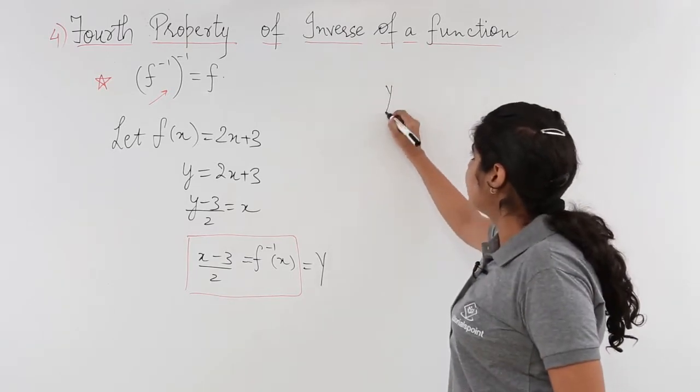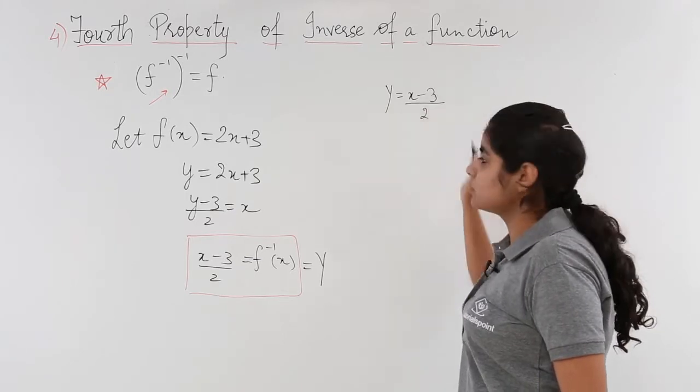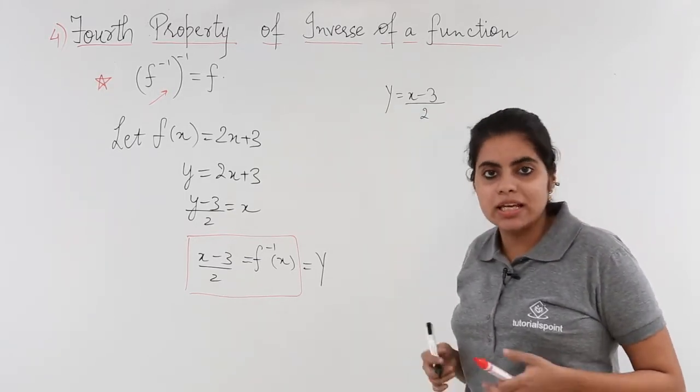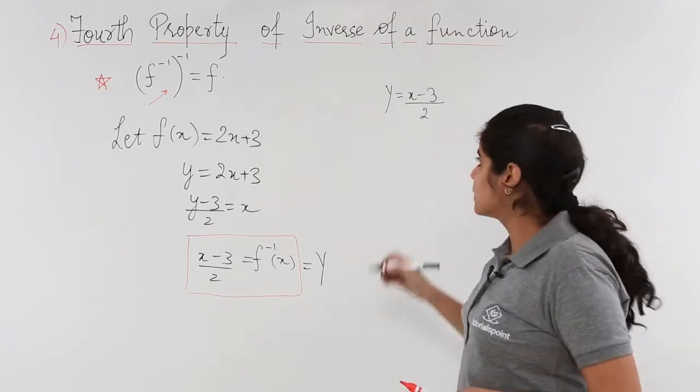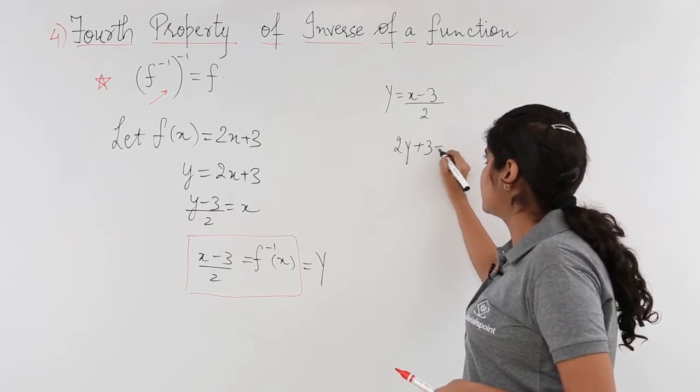Let y = (x - 3)/2. Now my task is to find the value of x again. So the value of x is 2y + 3.